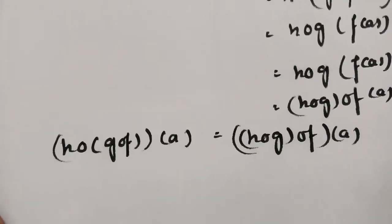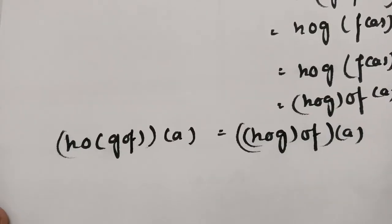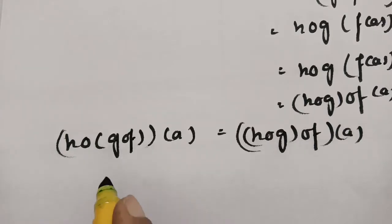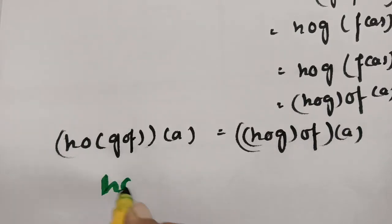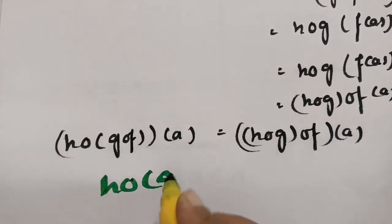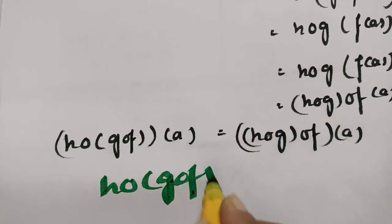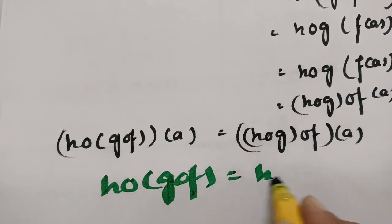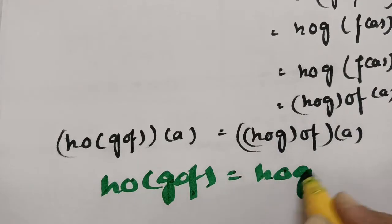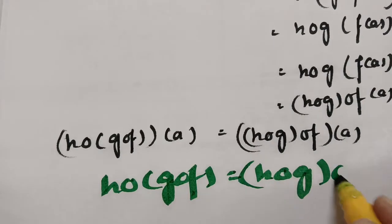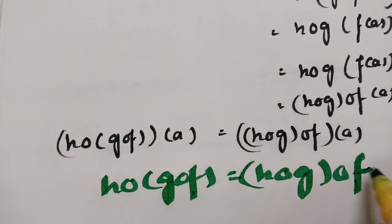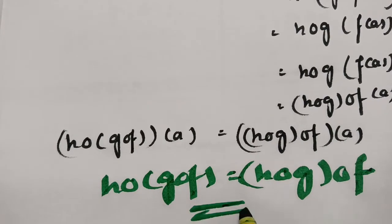Since A is the common domain, we can write H∘(G∘F) = (H∘G)∘F. We started with H∘(G∘F)(a) and arrived at (H∘G)∘F(a), which is exactly what was asked to show.